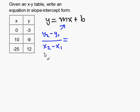Now, I'm going to pick two points from my table and apply it to this equation. So I'm going to pick 0, negative 3, 10, negative 9.